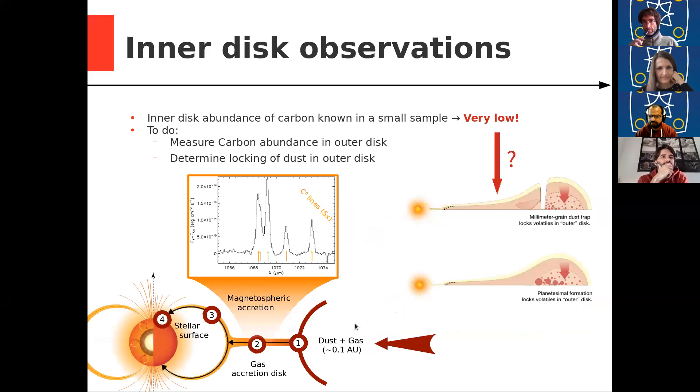So previously, we have had a nice study towards the inner disk. So these are neutral carbon lines. And they really target the gas accretion column. And we actually see that the carbon abundance is very low in the inner disk. And this is interesting because that could either mean that there is planetesimal formation going on in the system, or that there is just a lot more depletion in the outer disk than we think. But until now, we don't know what the carbon abundance is in the outer disk.